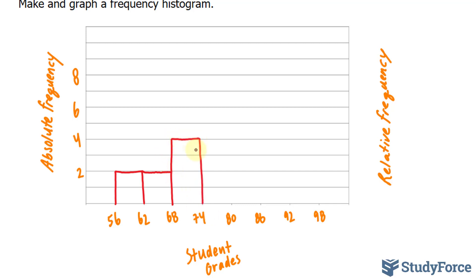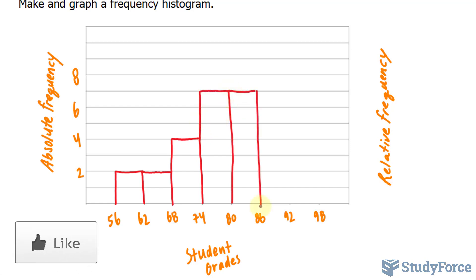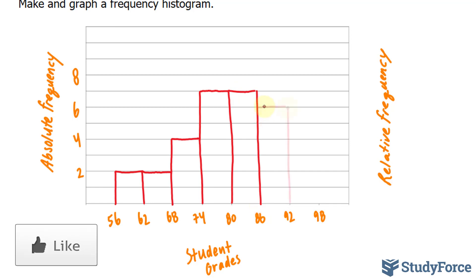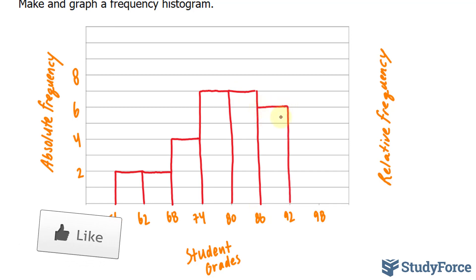Furthermore, between 74 and 80, there was a total of 7, so this bar will reach up to 7. Between 80 and 86, we also had 7. Between 86 and 92, we had 6. And finally, in the last class between 92 and 98, we had 2.